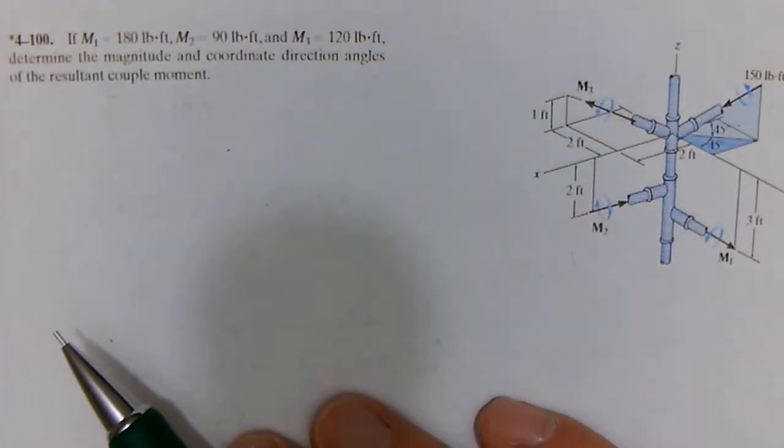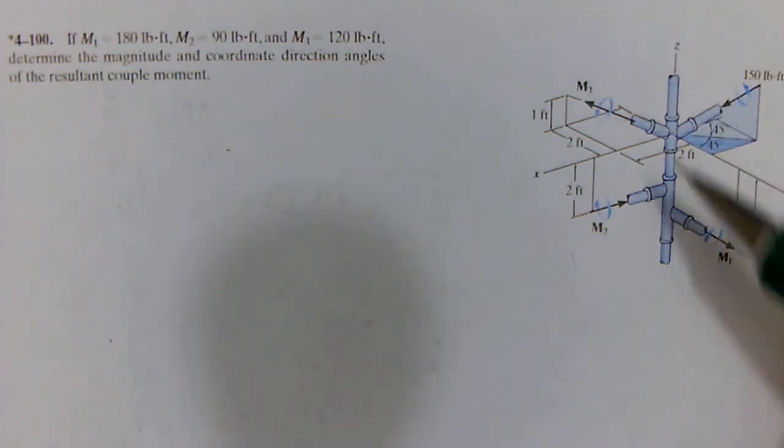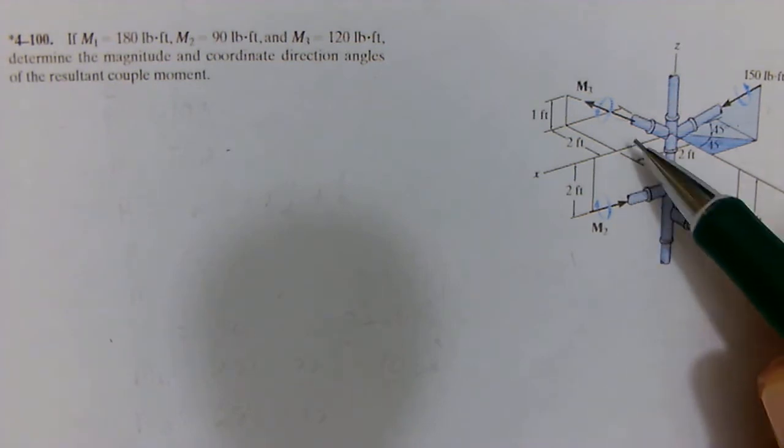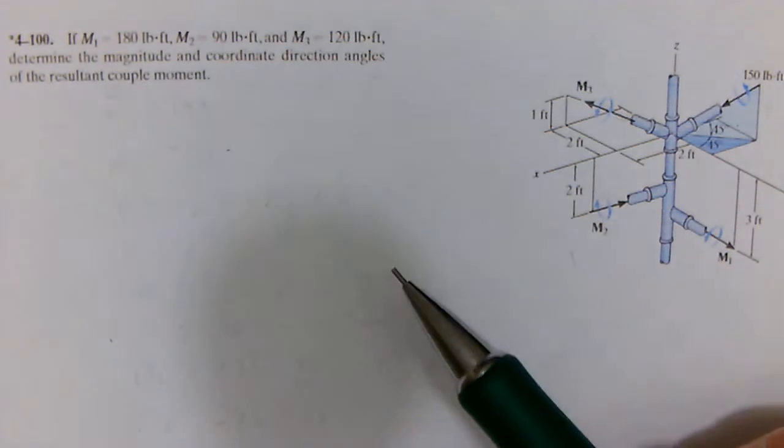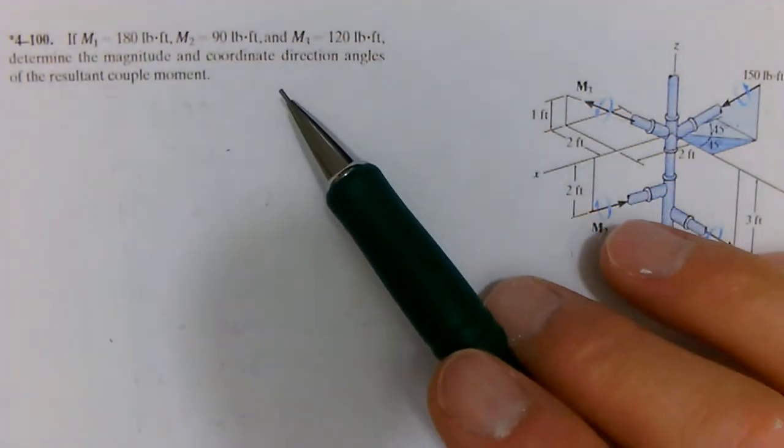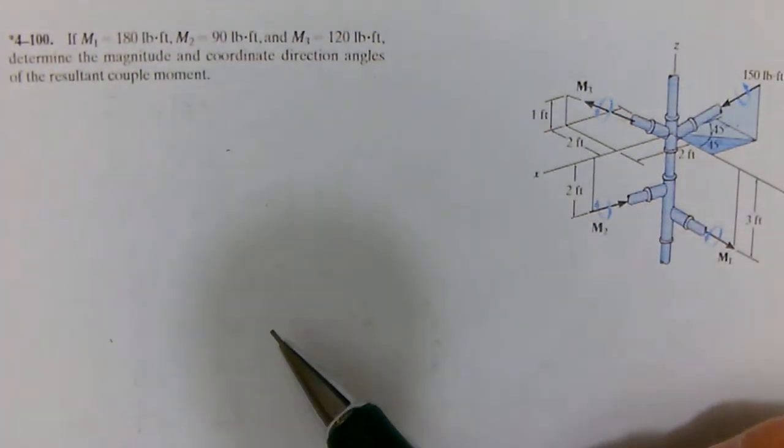Let's do problem 4-20. We have a pipe assembly here with four moments acting on it, and we want to add up all these and get the resultant moment and find the direction angles.